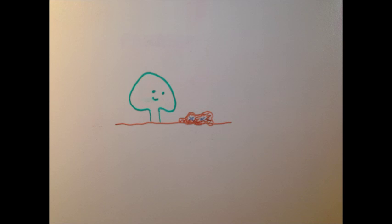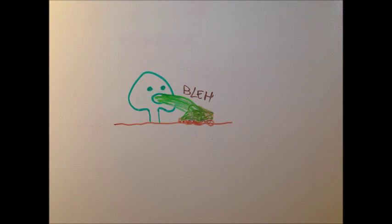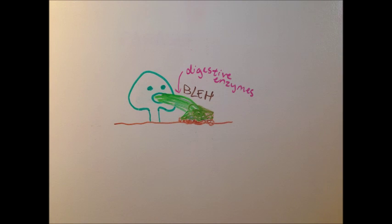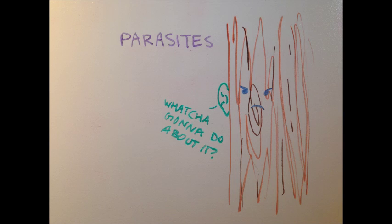In terms of decomposing, fungi function sort of like an inside-out stomach, releasing enzymes that break down the dead matter around them, and once it's in smaller parts, absorbing it. Parasitic fungi do much the same thing, but they use live tissues for a food source rather than dead tissue.